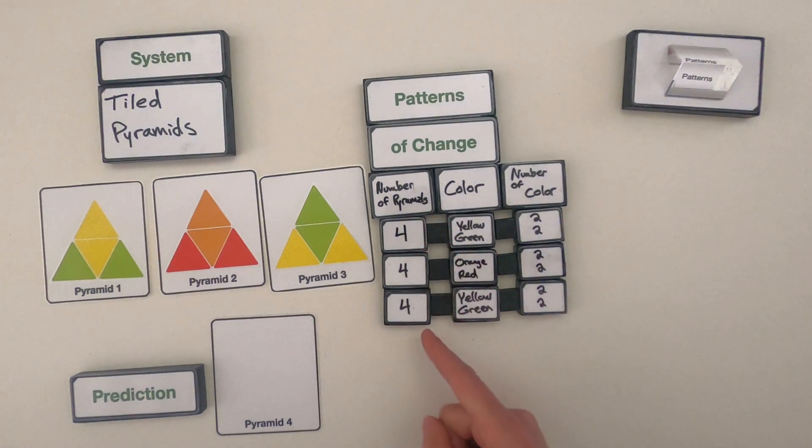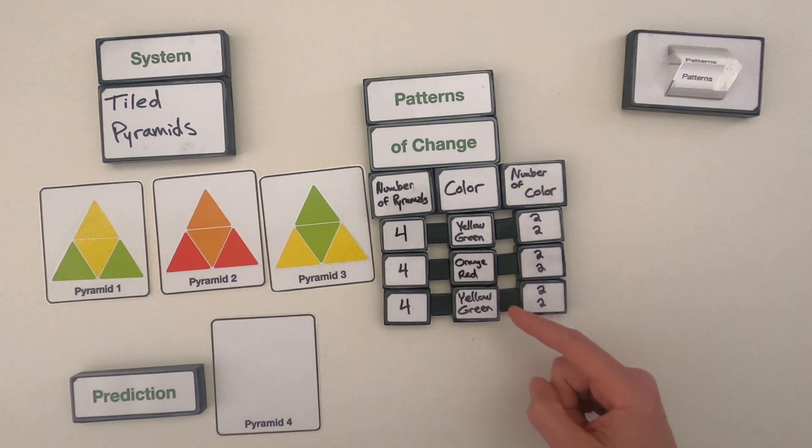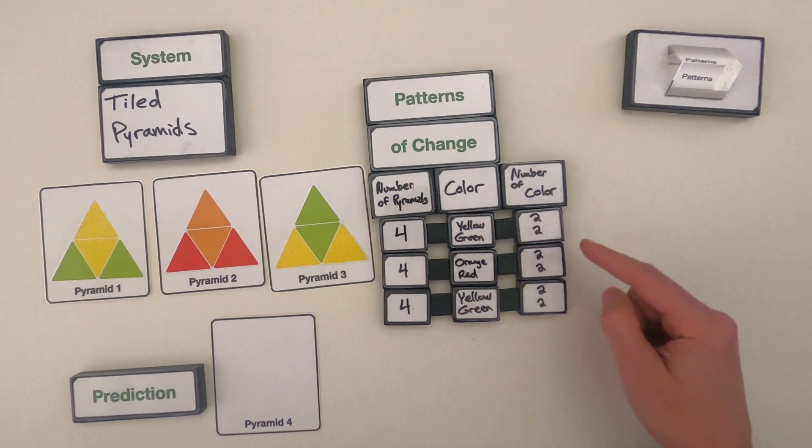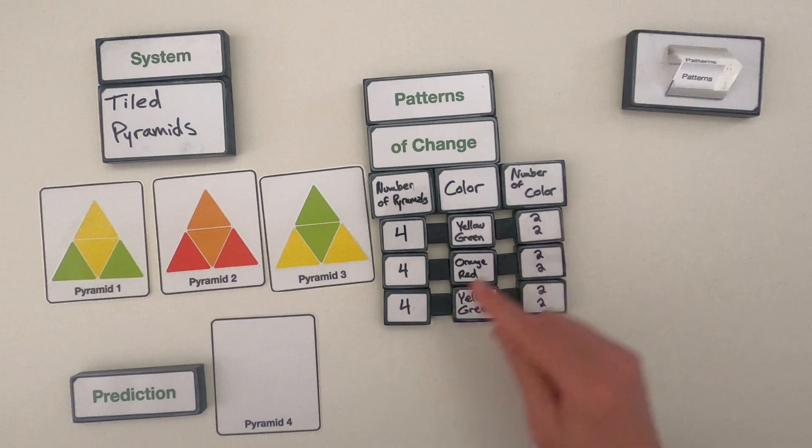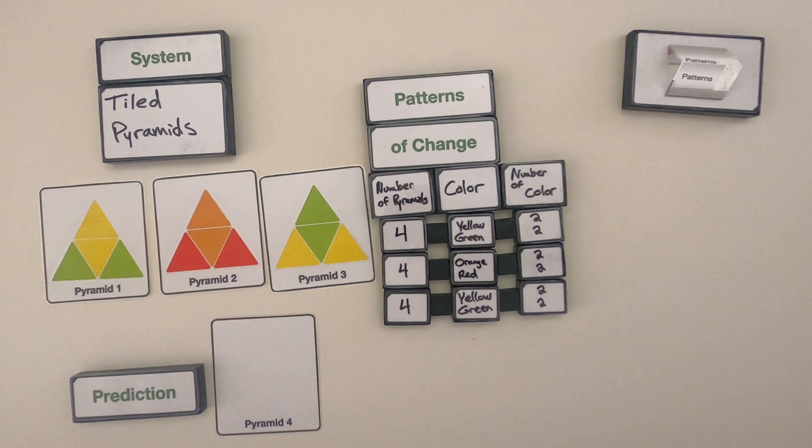So I've noted that they all have four pyramids. The color is changing from yellow-green to orange-red to yellow-green. And then the number of each color. There's going to be two triangles within each pyramid that are making up those specific colors. But where they're oriented is important to me as well. So let me write that down as a pattern of change as well.